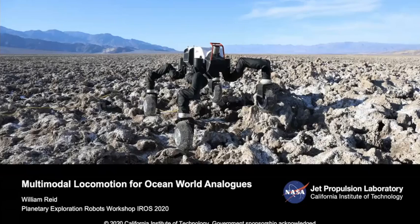I'd like to introduce you to the Robo-Simeon rover, which Olivier was referring to briefly. Much like Hendrik's Spacebok robot, it's a limbed rover, but it's got wheels at the end of each limb. What I'll be focusing on in this talk is: if you were to send a robot to an ocean world such as Europa or Enceladus, how would you traverse around the surface?